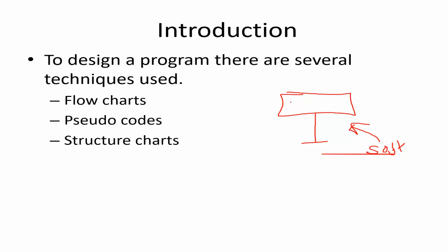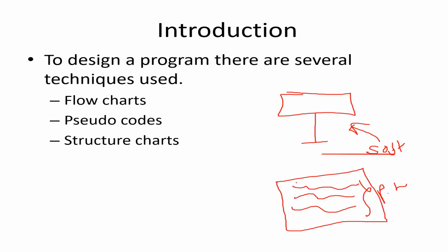When we develop programs, before developing them, we usually design the program using a set of tools and techniques. Here we see some of those techniques that we use to design. For programming languages, we have to write code. With the help of that code, we are going to develop the software. Before writing the program, we have a design part, and that is what we are going to talk about within this section.